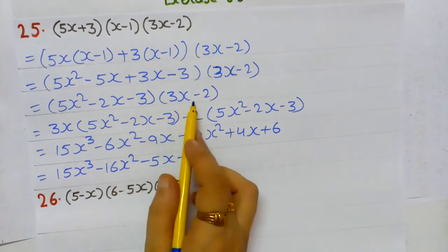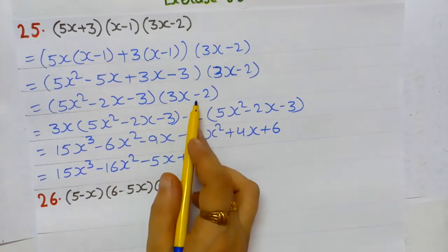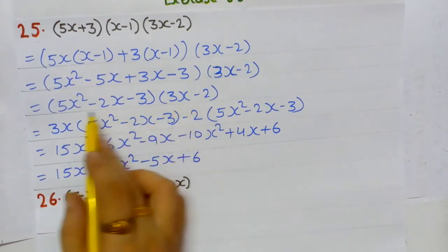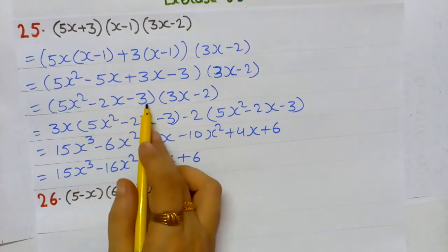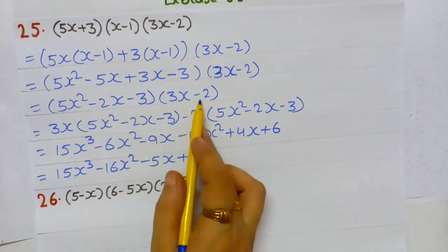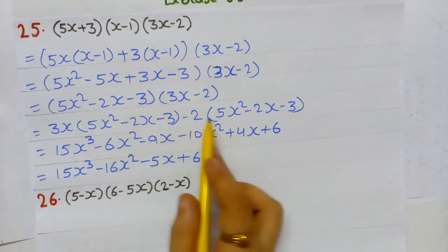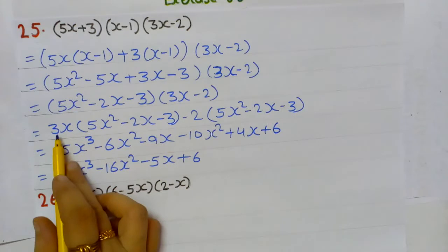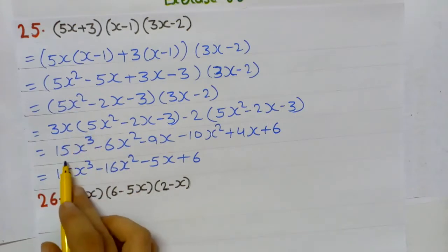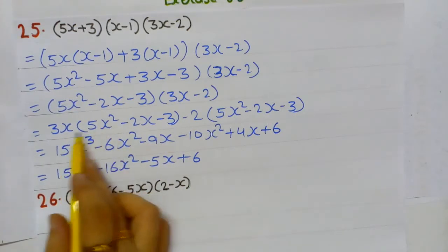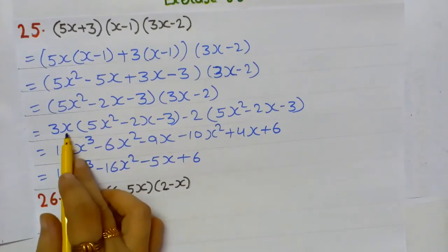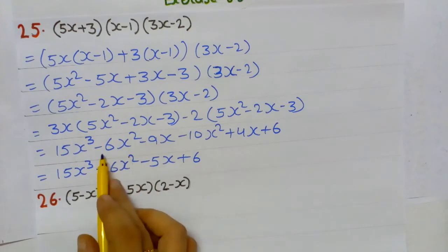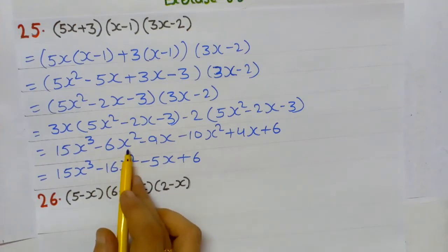The 3rd bracket remains as it is. Now -5x + 3x = -2x. So the expression becomes (5x² - 2x - 3)(3x - 2). We again apply distributive property — breaking the 2nd bracket, multiplying 3x and then -2 by the 1st bracket.